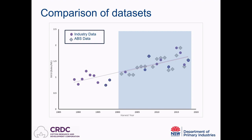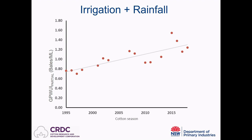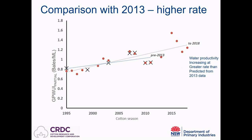When we look at the productivity of irrigation plus rainfall, we see the same trend — a steady, statistically significant improvement in water productivity going back to 1995 over the last two decades. When we compare the trend calculated for data up to 2018 against the rate of improvement estimated with data from 2013, we see that water productivity is actually increasing at a faster rate than we would have estimated five years ago. So not only is water productivity significantly higher than it was in 2013, the rate of improvement is accelerating.